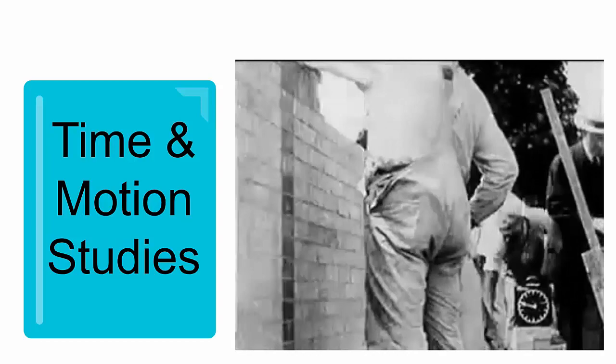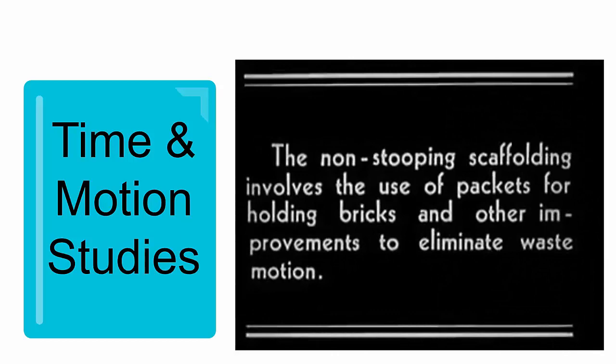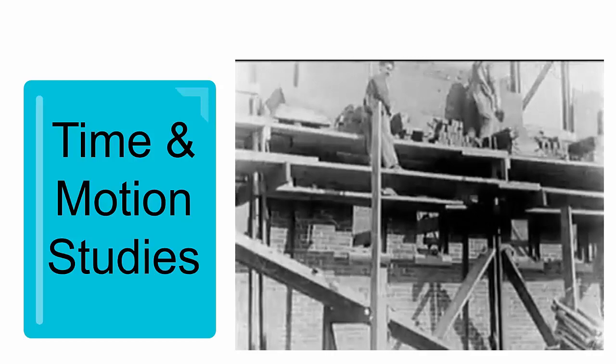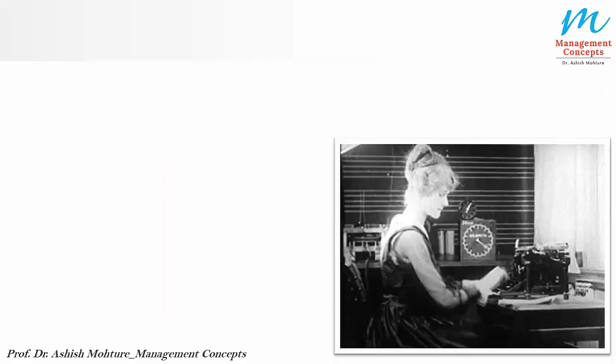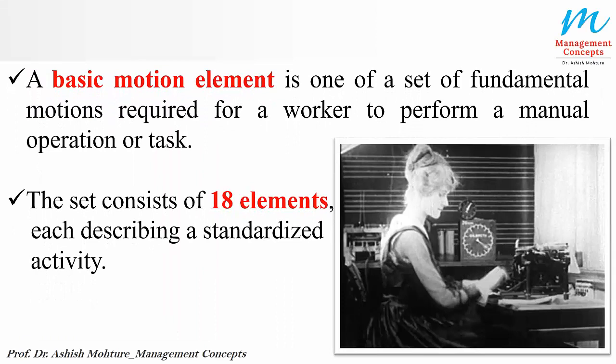The timing is being counted — how much time is being used there, how much time it takes to place a brick at that point. This was the complete study. After that, observations were made. A basic motion element is one of a set of fundamental motions required for a worker to perform a manual operation or task. The set consists of 18 elements, each describing a standardized activity. Gilbreth also observed typists and the motions involved in typing, with a clock visible here as well.